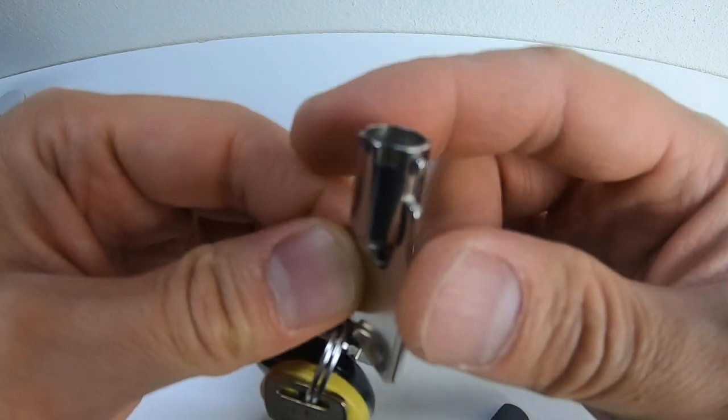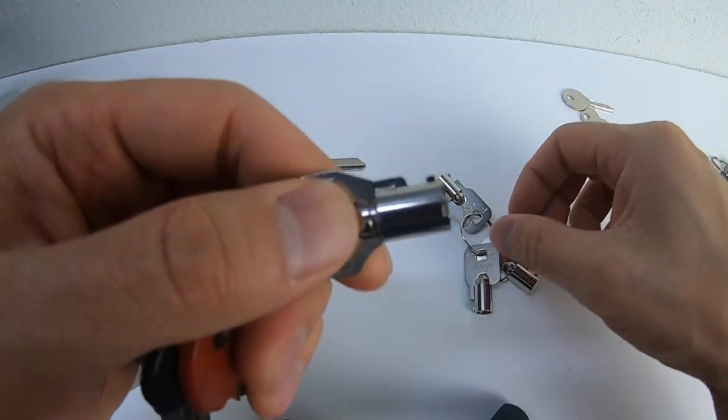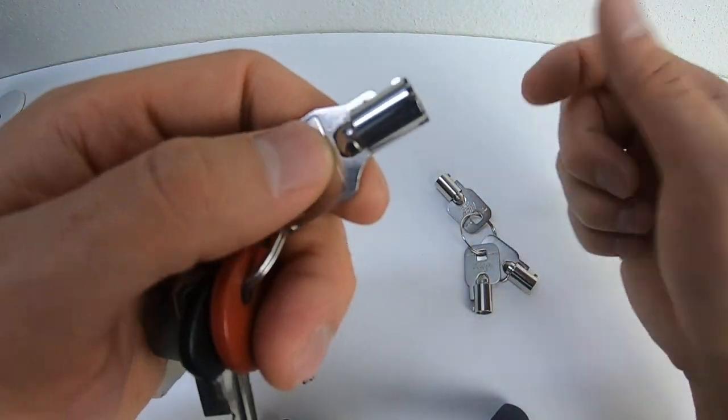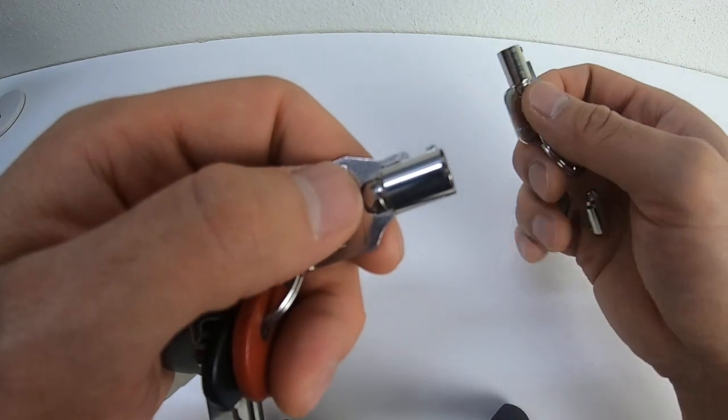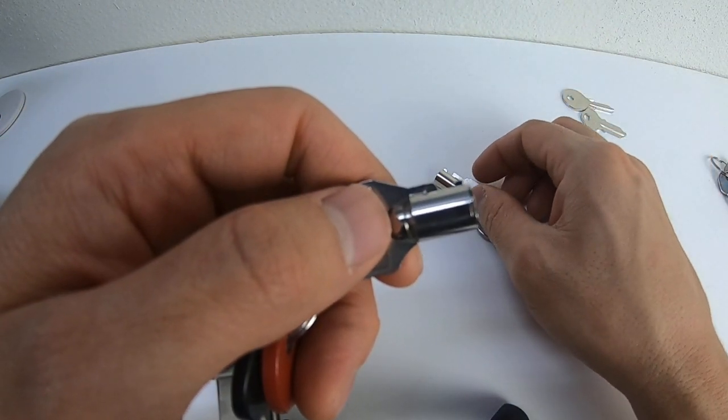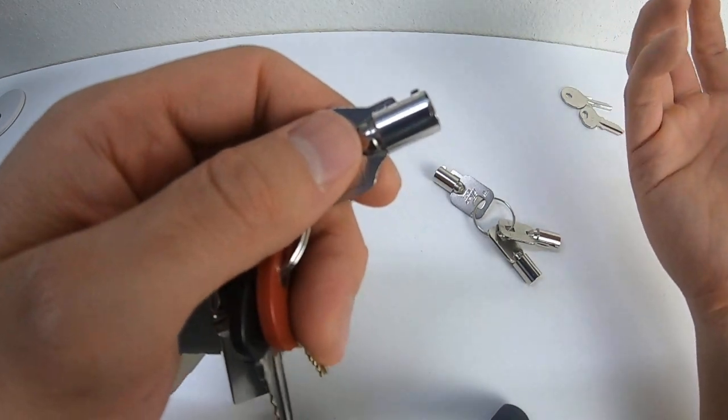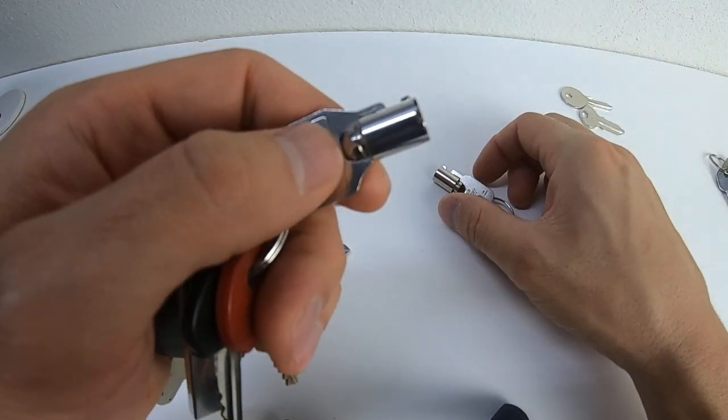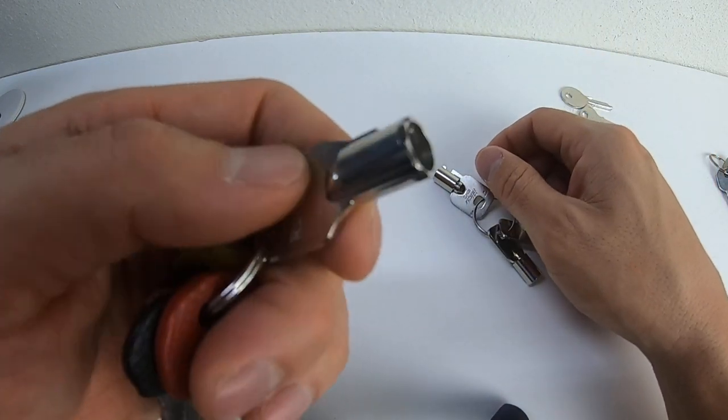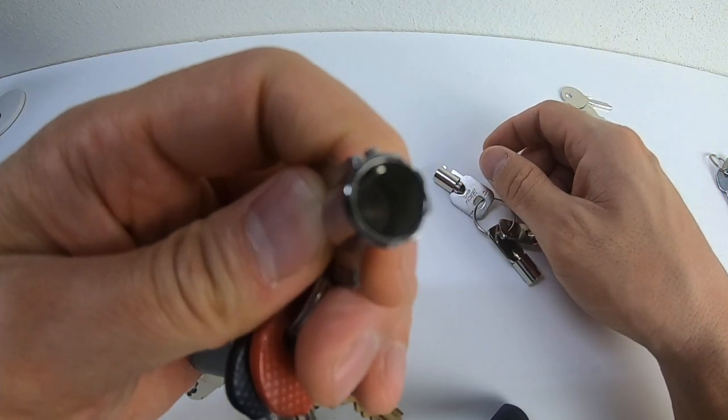But this is a tubular key, and yeah, they're pretty rare. Harley Davidson uses this. Vending machines will use tubular keys and other things as well. But yeah, they're not too popular, but they show up here and there, and we'll show you how to cut that as well.